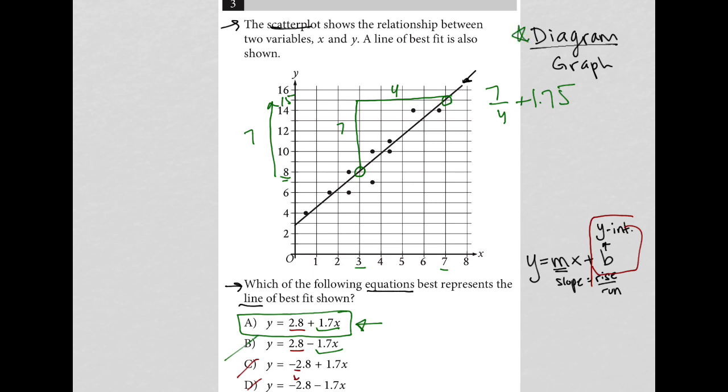But I like the diagram method, right? Where we can just eyeball where the y-intercept is. And in this case, eyeball that I want my slope to be positive. So therefore, a is the best answer here.